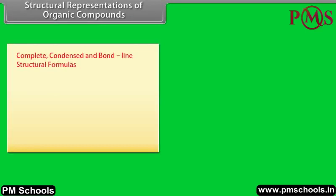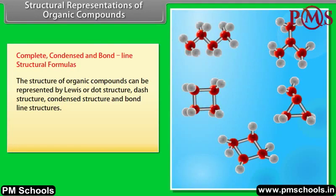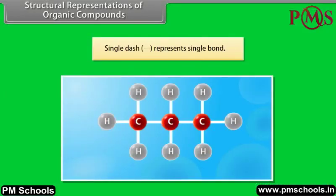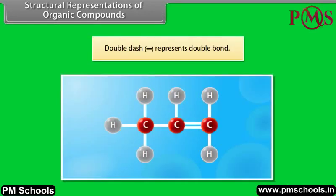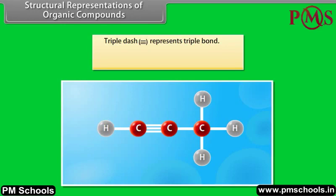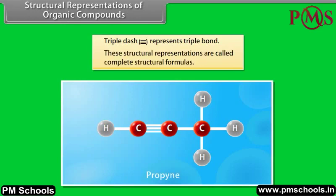Structural representations of organic compounds: complete, condensed and bond-line structural formulas. The structure of organic compounds can be represented by Lewis or dot structure, dash structure, condensed structure and bond-line structures. The Lewis or dot structures can be simplified by using dashes. A single dash represents a single bond (e.g., propane), a double dash represents a double bond (e.g., propene), and a triple dash represents a triple bond (e.g., propyne). These structural representations are called complete structural formulas.